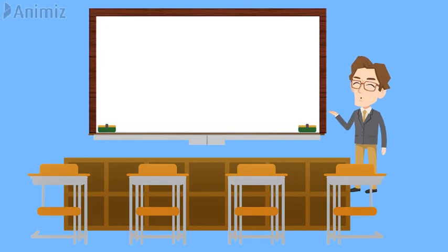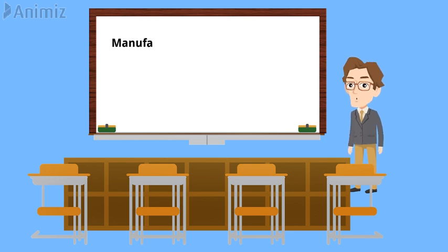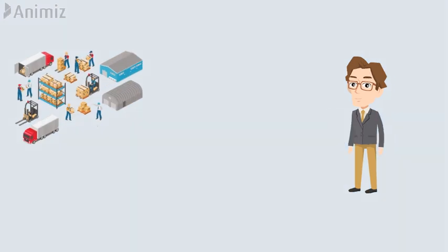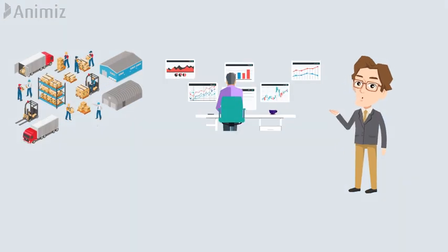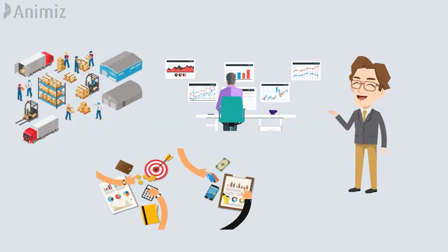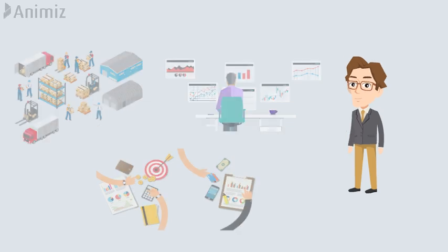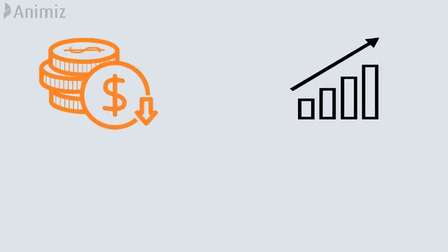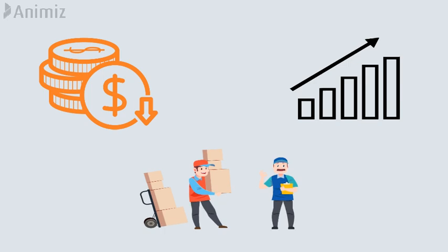In this video you are going to learn Manufacturing Resource Planning or MRP2. MRP2 is a computer-based system used for the effective planning of all resources of a manufacturing firm. It enables manufacturers to develop a precise production schedule for the future that minimizes costs and maximizes the use of the resources available at their disposal.